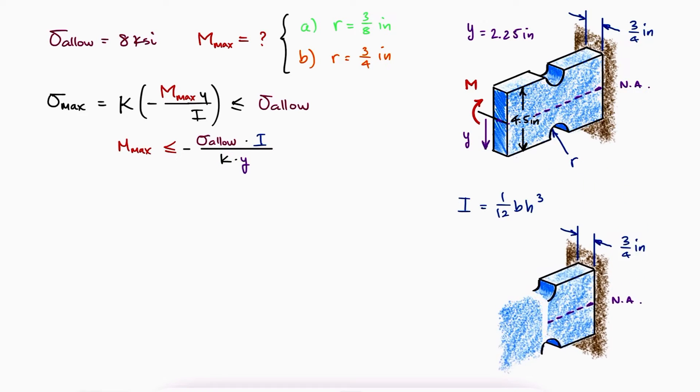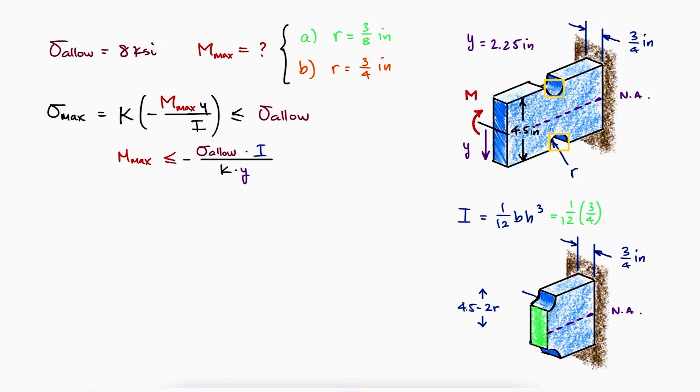For question A, the cross section area at the grooves will have a base of 3 fourths of an inch and a height of 4.5 minus 2 radii of 3 eighths of an inch.